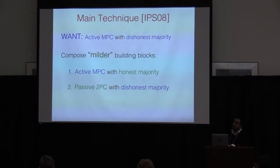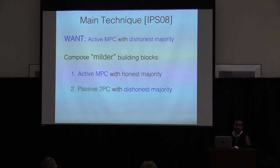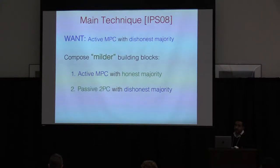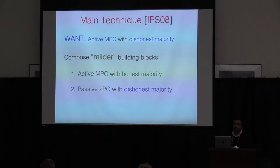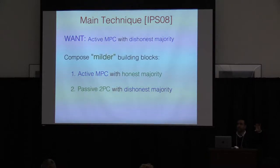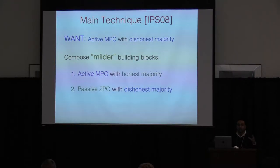In the IPS client-server model, two clients have inputs. The clients distribute their inputs to a set of servers, the servers do the computation, and return answers to the clients. An adversary can corrupt at most one of the clients and at most half of the servers. All classic honest majority protocols fit in this model. The second component is a passive two-party computation against dishonest majority, where GMW is the classic protocol for evaluating secure arithmetic functionalities using passive OLE for every multiplication.